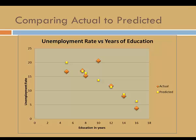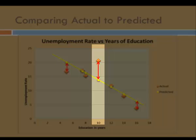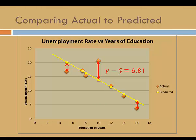Here's a scatterplot that includes both the actual observed values of y and the predicted values of y. The orange markers represent the observed values of y, and the yellow markers represent the predicted values. Here's the regression line. The residuals are the differences between the observed values and the predicted values. When years of education is 10, the residual is 6.81. The residual is positive when the actual unemployment rate exceeds the predicted rate, and negative when the predicted rate exceeds the observed rate.